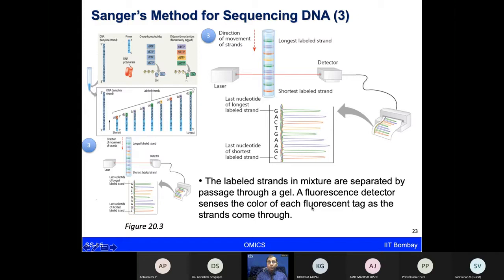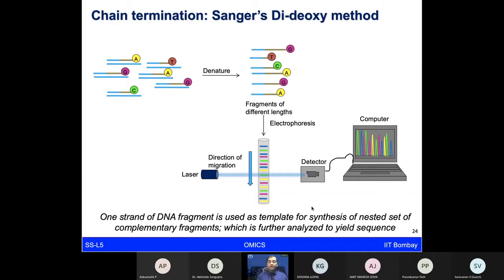As the labeled strands are generated, they pass through a fluorescent detector which reads the sequence of nucleotides — such as GAAGC — based on fluorescent patterns. This gives the idea of how double-stranded DNA is denatured, dNTPs and ddNTPs are added with primers and DNA polymerase, and after cycle elongation the sequences are read in fluorescent readers, generating distinct patterns.